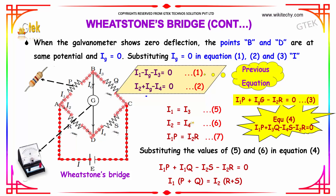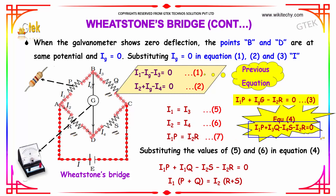These are the three equations formed. Substituting all these conditions into equation 4 — replacing I3 by I1 and I4 by I2 — we get I1P plus I1Q minus I2S minus I2R equal to 0. Moving terms to the right side and taking I1 out: I1 into (P plus Q) is equal to I2 into (R plus S).